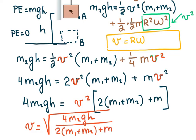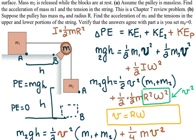That formula applies when the masses fall a certain distance and we want the final velocity. If instead you're asked for acceleration and tension in the rope, the approach is completely different. When the pulley has mass, the tension at the top and bottom of the rope are different — call them T1 and T2. If T1 equaled T2, the pulley would not rotate.